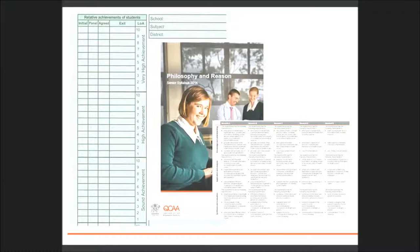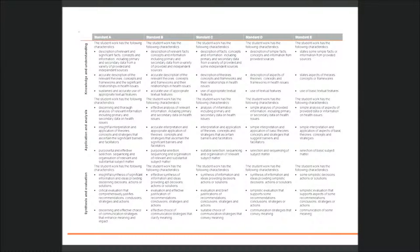Relative achievement decisions are made by looking at the extent to which the standards have been achieved across the dimensions of the syllabus — at, for example, a threshold, low, typical, or better than typical standard. Just as schools make decisions about achievement on a Form R6 as A, B, C, D, or E, schools also make decisions about achievement in dimensions.